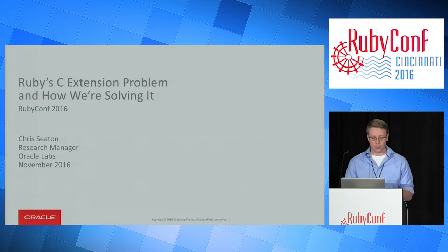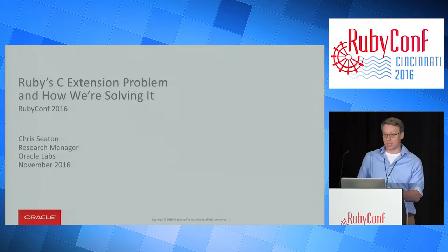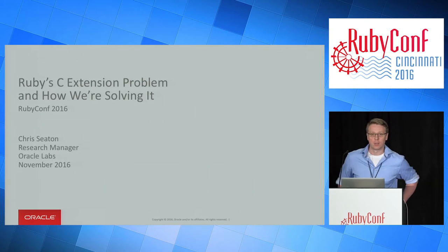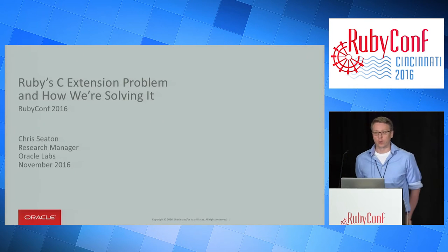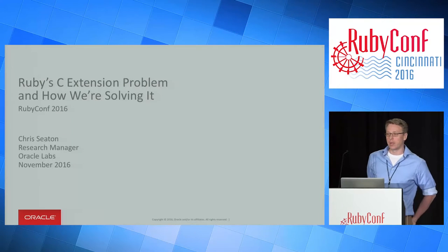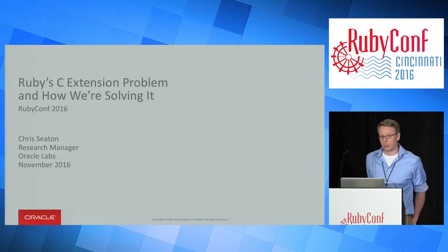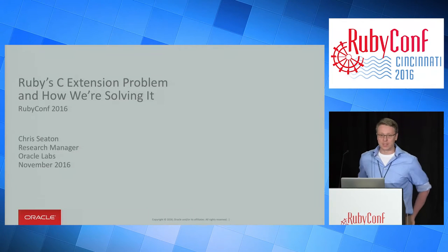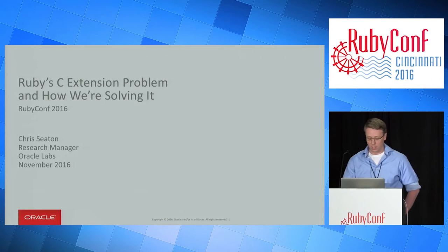I'm Chris Seaton. This is a talk about Ruby's C extension problem and how we're solving it. I work for Oracle, and I work on a new implementation of Ruby called JRuby Truffle. I'll talk a bit about what JRuby Truffle is and our progress on it, but the main thing I want to talk about is the C extension problem and why it is we need to solve it.